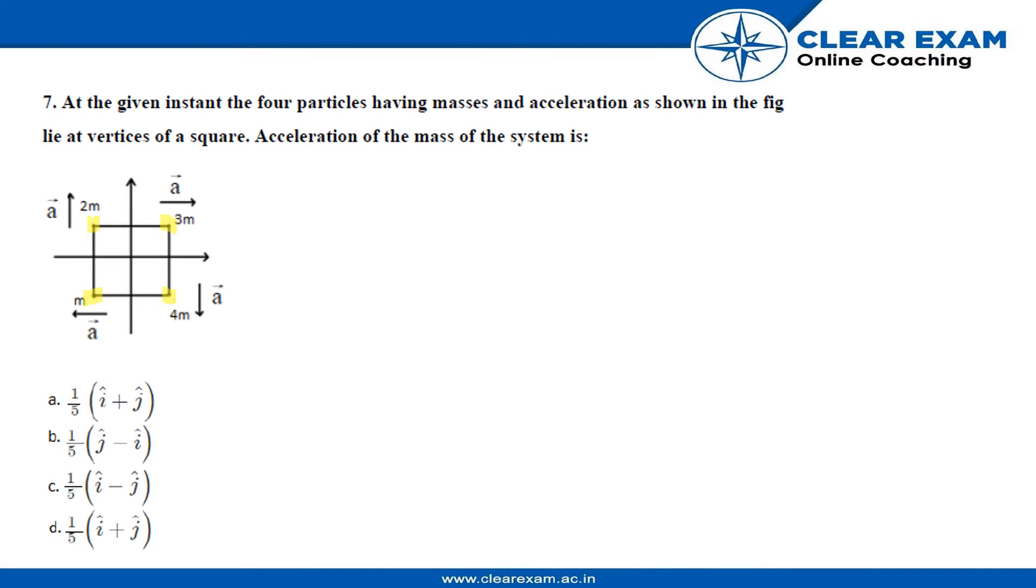So the mass of this particle is 2m and acceleration a in positive j cap direction. This second particle has mass 3m and its acceleration is a in positive i cap direction.